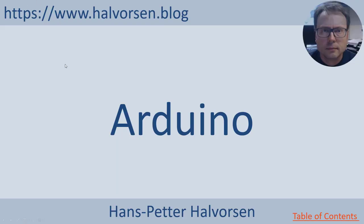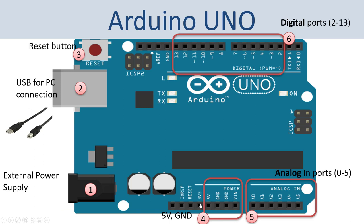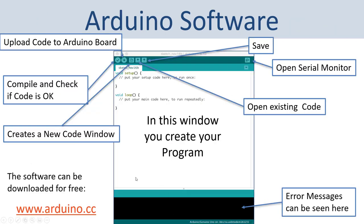Let's get started with the Arduino platform. Arduino is an open source electronic platform based on easy-to-use hardware and software. It's intended for anyone making interactive projects, from kids to grown-ups. You can connect different types of sensors like temperature sensors, control a process, and it's typically used a lot in Internet of Things projects. We will use the Arduino Uno, which is the most used Arduino board. Just plug it in via USB and install the Arduino programming environment, which you can download for free from the Arduino web page.